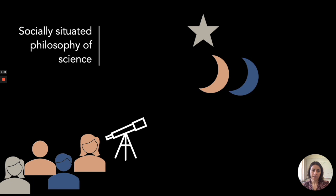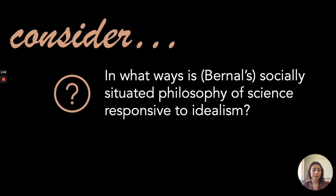For our astronomer, Bernal would say scientists don't operate as individuals but in communities, and the interests of each scientist are shaped by society — determining what they study. We then ask: in what ways is Bernal's socially situated philosophy responsive to Kantian idealism or the simple fact-gathering view of science?